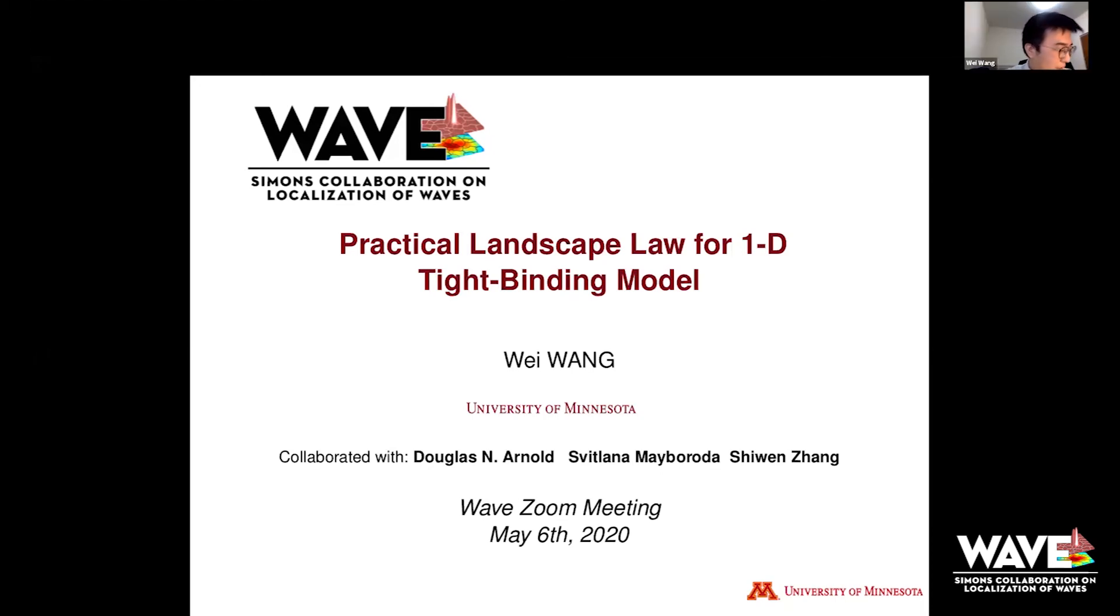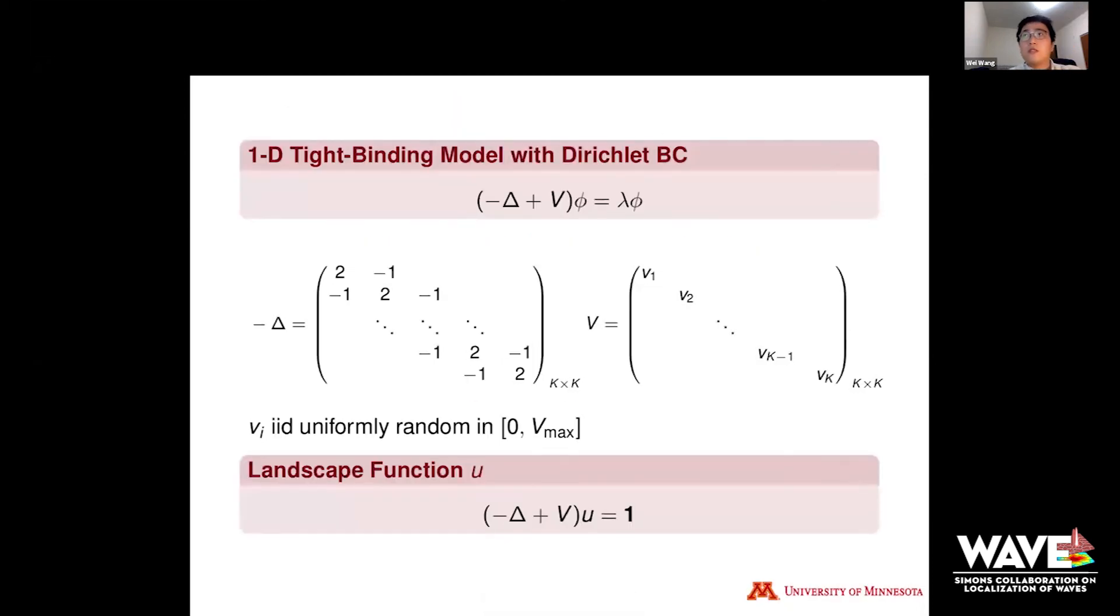Thank you. My presentation here is about the discrete case for the 1D tight-binding models, and this can be seen as follow-ups of previous human presentations. Let me introduce the 1D tight-binding models with the periodic boundary condition. Here's negative Laplacian and the potential matrix, and Vi is taken uniformly random from 0 to V_max. In all my slides here, I just consider the uniform case, and the Bernoulli case has similar behaviors.